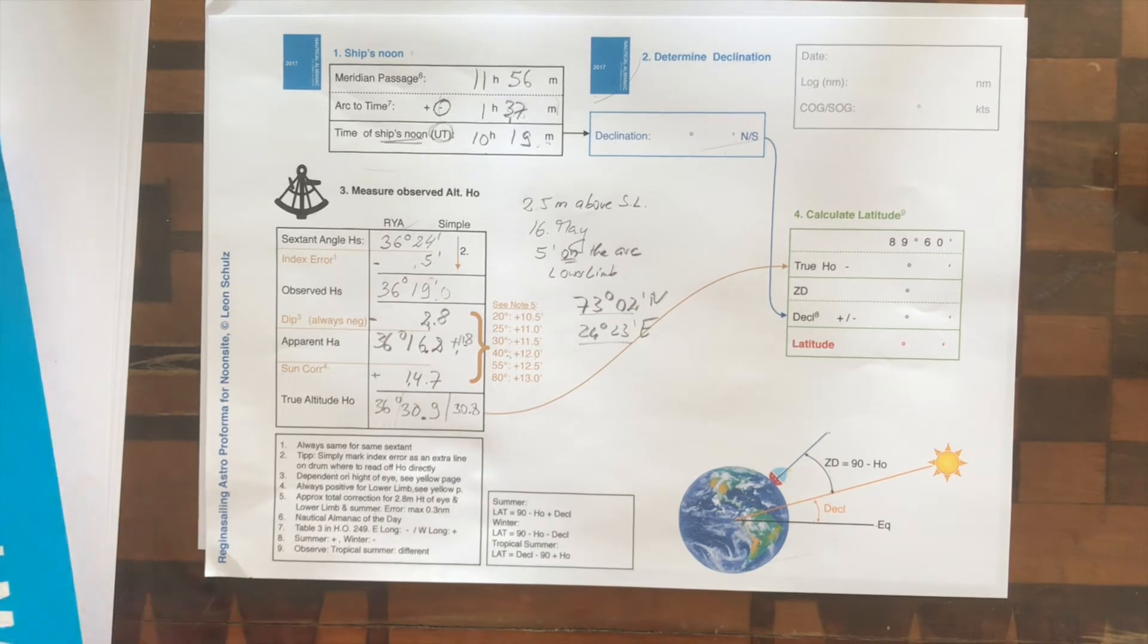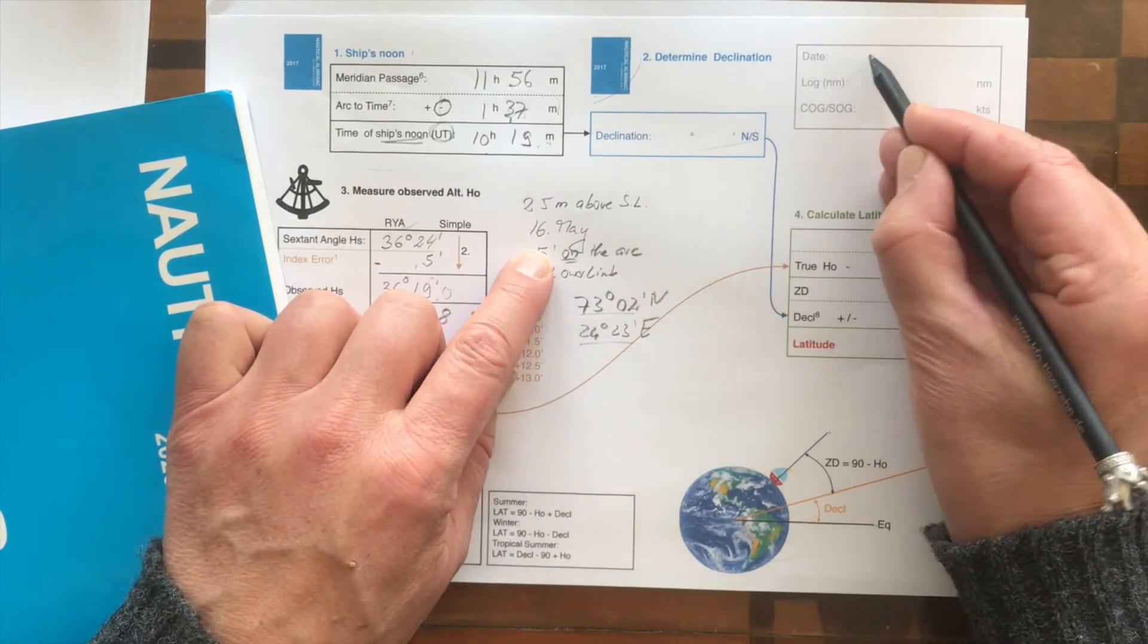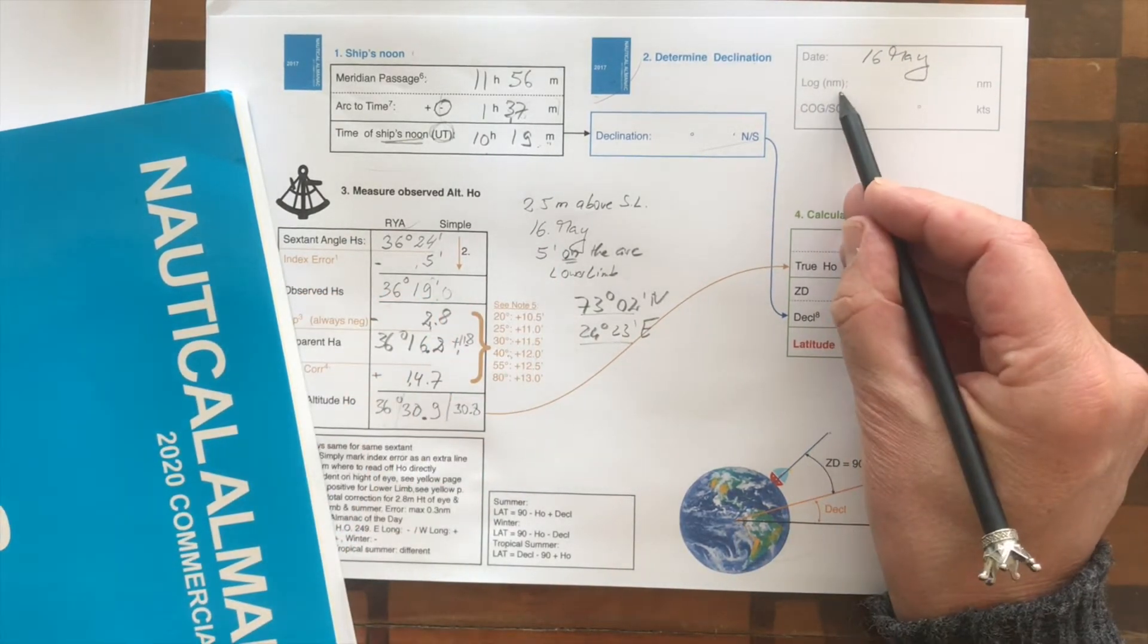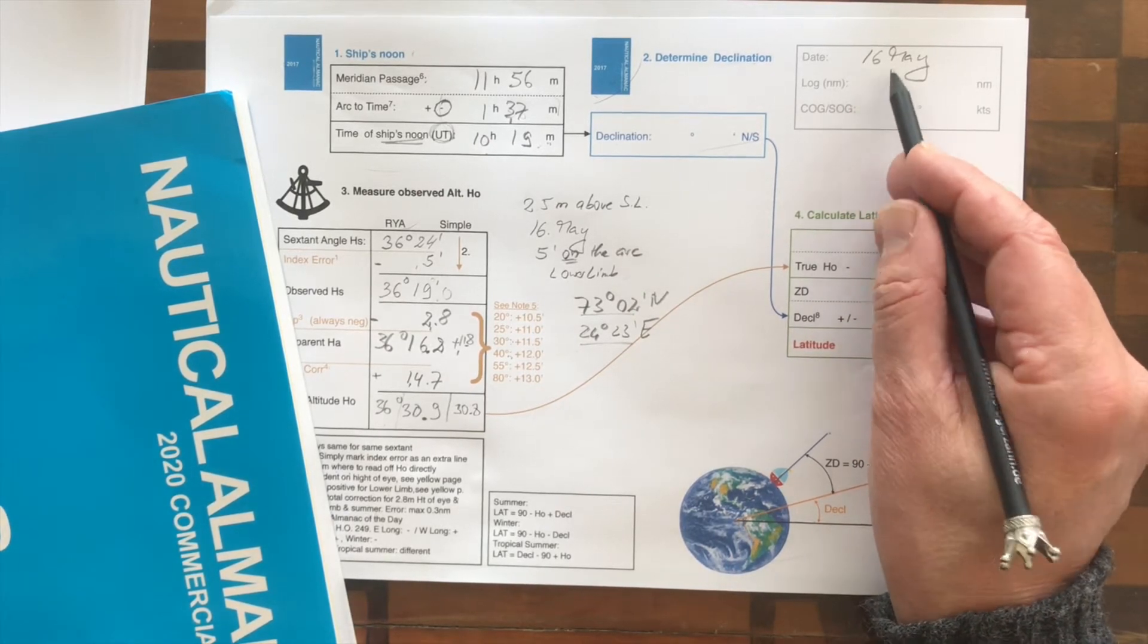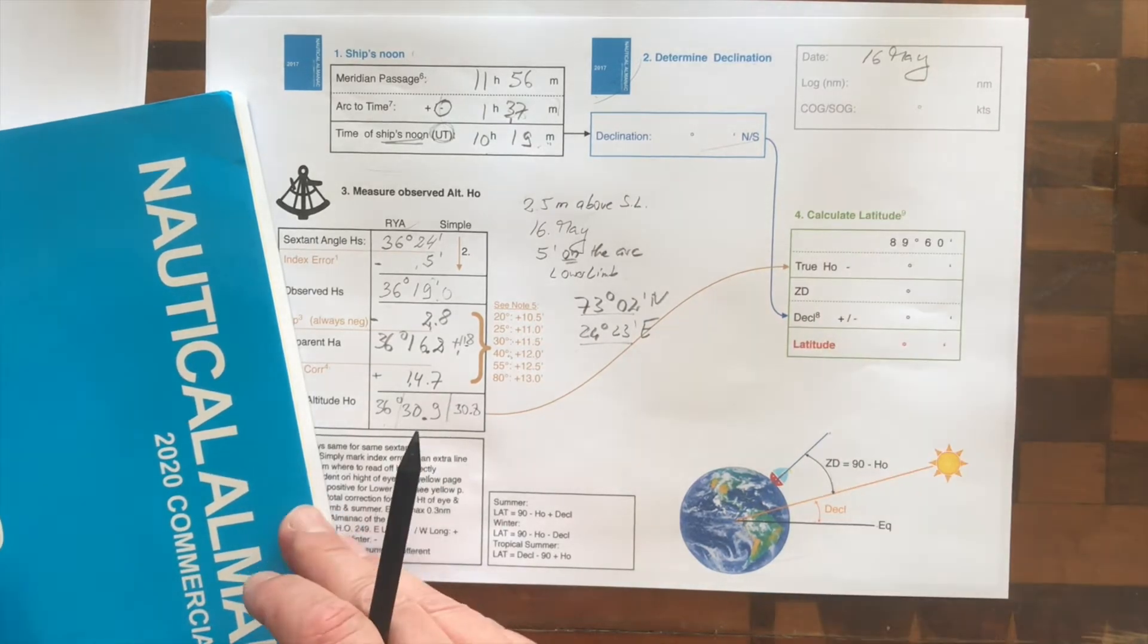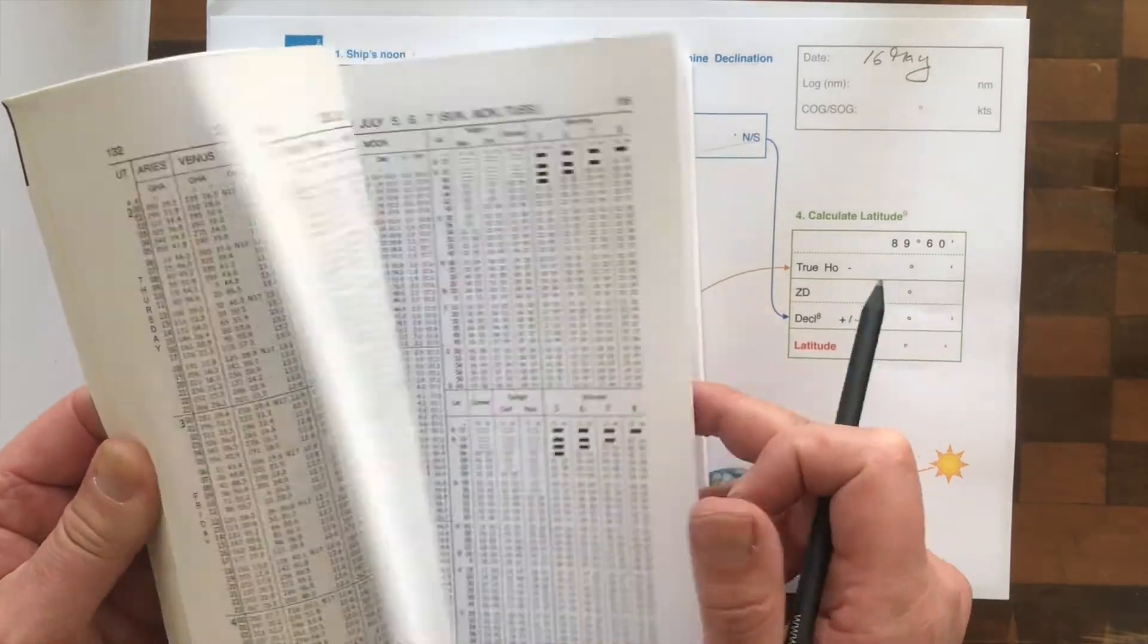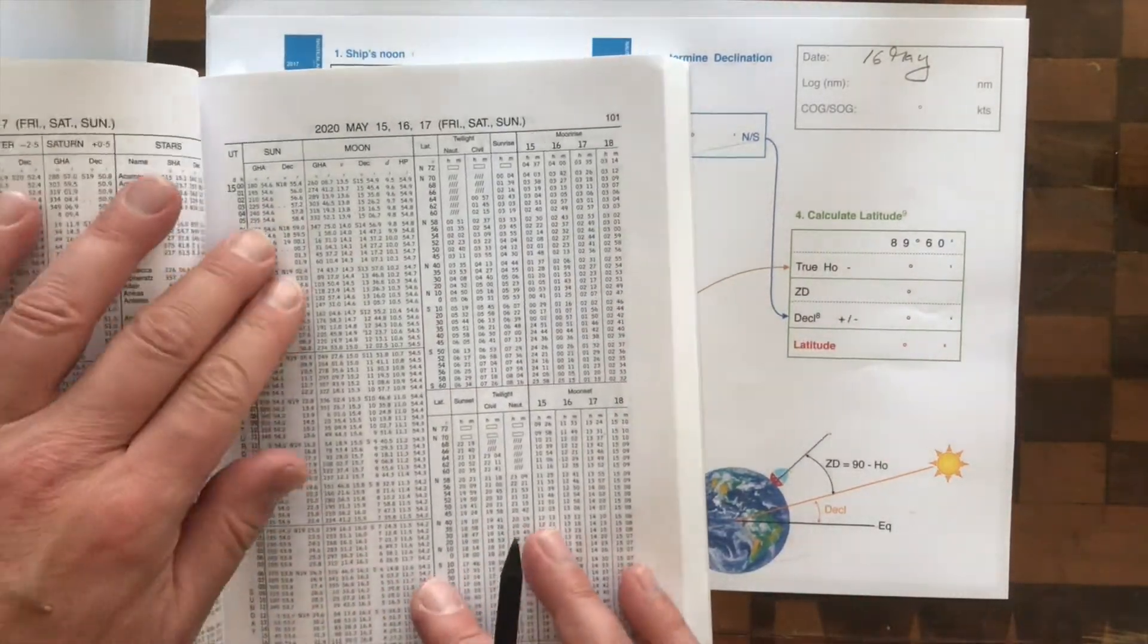For the sake, it is the 16th of May. Actually, I've written date here, so I can write 16th of May here. And then you can write the log and the course and speed over ground. That's because we want to do the transferred position line later. So you can disregard from that right now. Let's look here on the 16th of May.